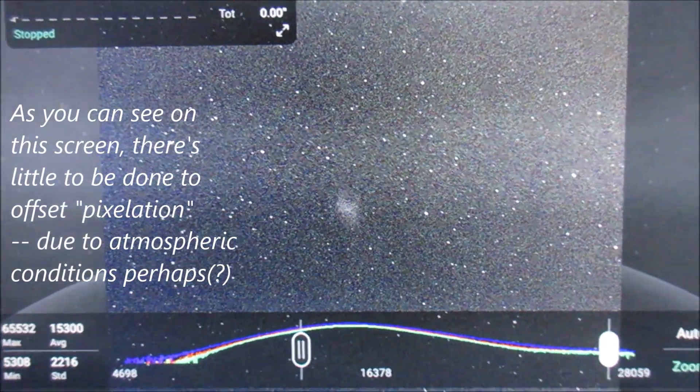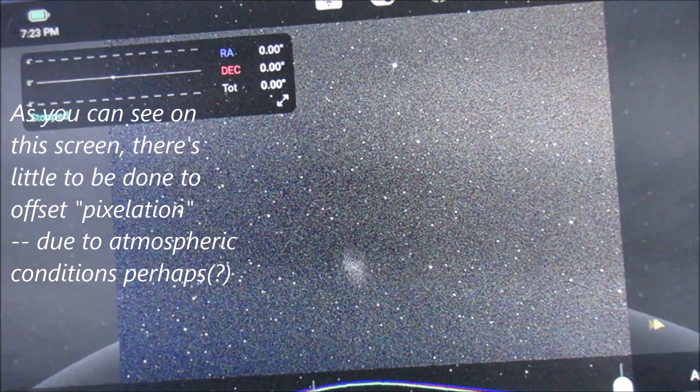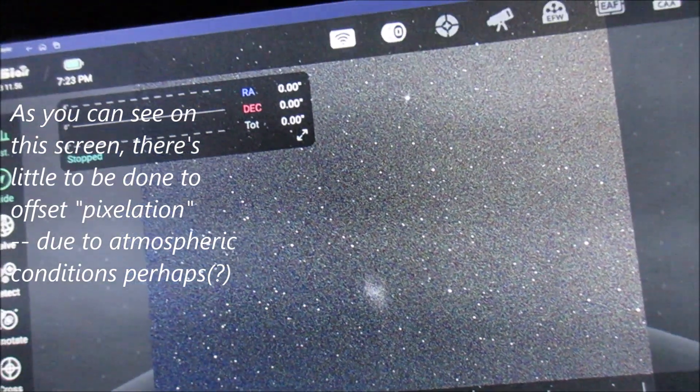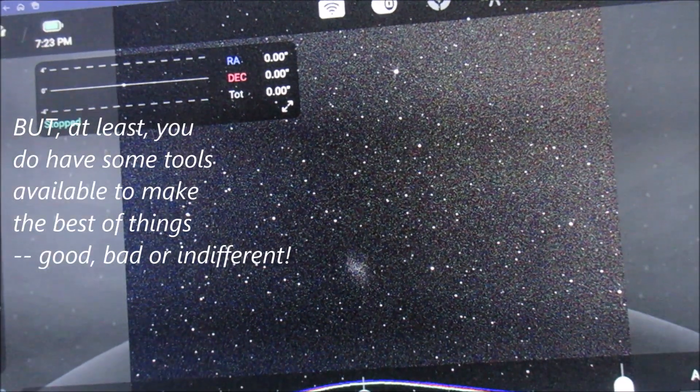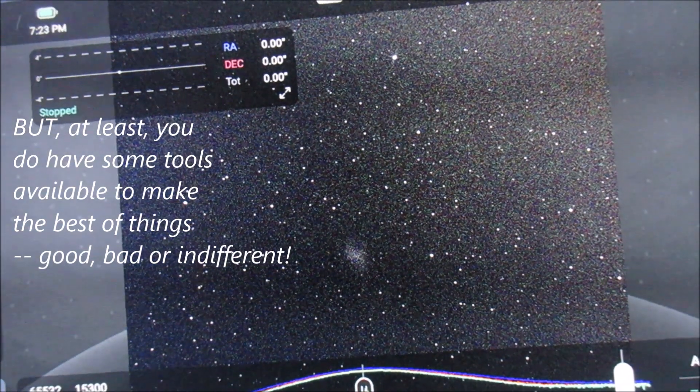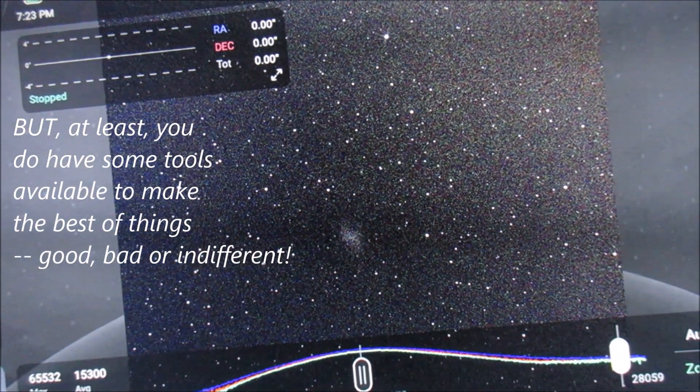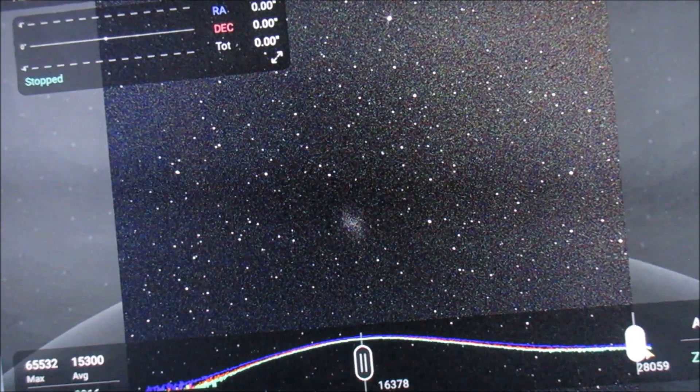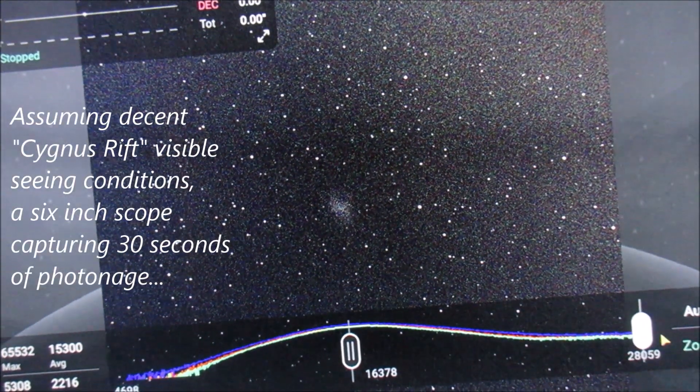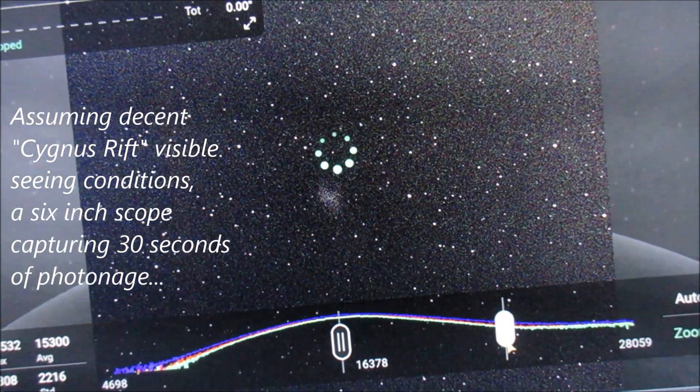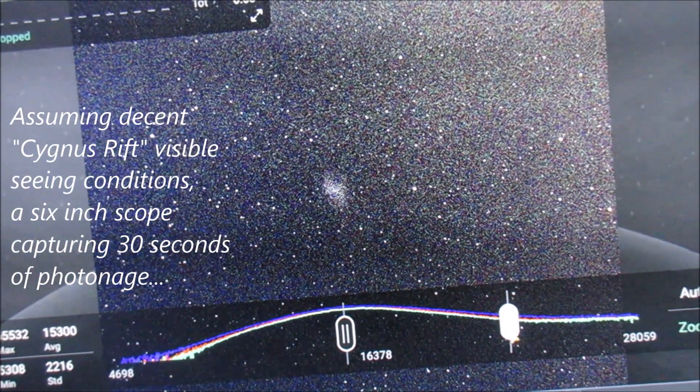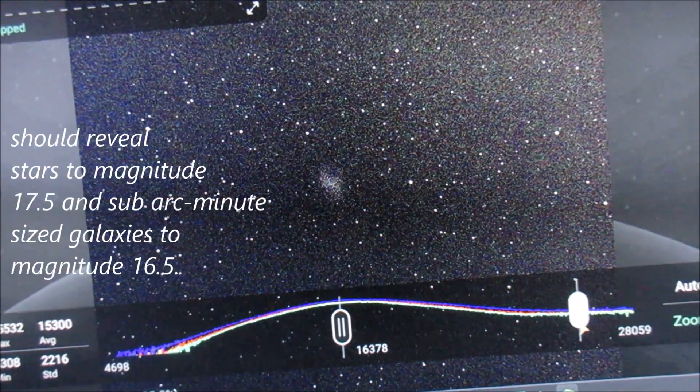While we're waiting for Messier 42 to emerge from the roofline, let's have a look at a 3 second exposure of the Crab Nebula, Messier 1. Pushing this slider all the way to the right, moving it to the left, it gets rather bright, still extremely pixelated. Not very satisfying.